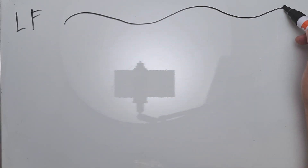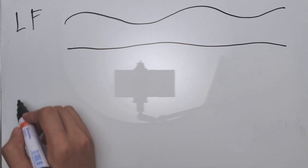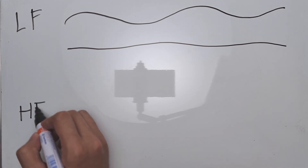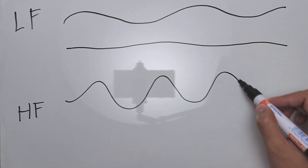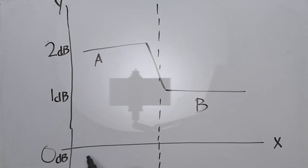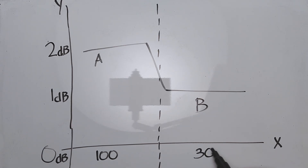Really low frequencies will look like a straight line and be more or less uniform. On the other end, the higher the number, the shorter the wave and the higher the pitch. Really high frequencies have a lot of oscillations that make them go up and down within limits. Line A represents the 100 Hz frequency with a decibel rating of 2 relative to 0, and line B represents the 300 Hz frequency with a decibel rating of 1 relative to 0. In this example, the lower frequencies are louder than the higher frequencies.